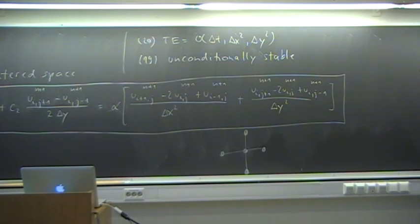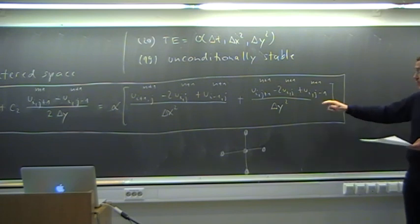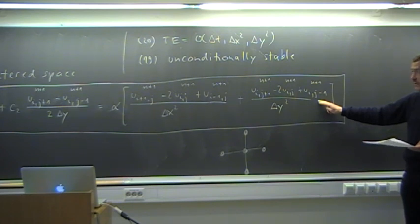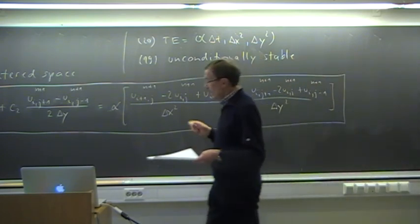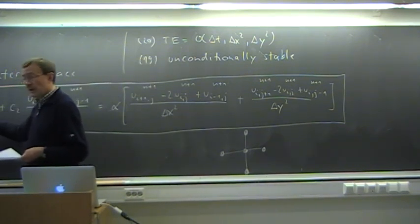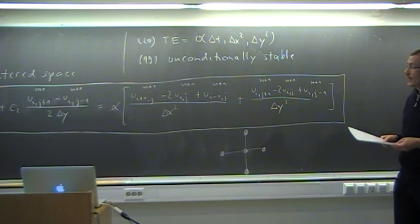That has to be solved in each time step, which is much more costly than using an explicit scheme like the forward time-centered space, but we have no stability restriction. The matrix has, however, a different structure than for the Poisson equation. For the Poisson equation, the matrix was symmetric and positive definite. Here it is neither symmetric — the asymmetry comes from the plus and minus signs in the convective terms — that part is anti-symmetric, this part is symmetric. Diagonal dominance is only guaranteed for cell-Péclet numbers smaller than or equal to 2.